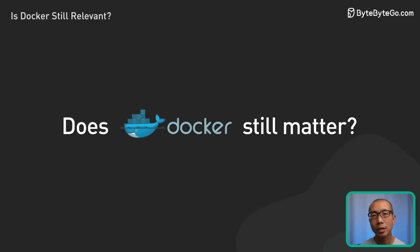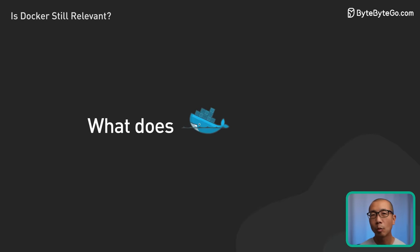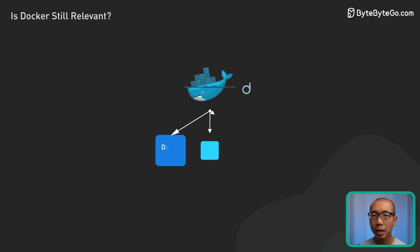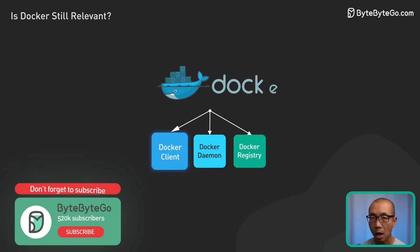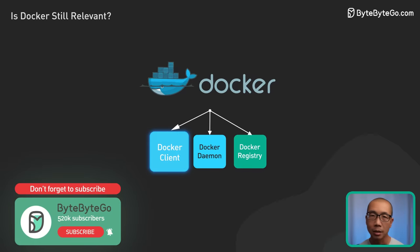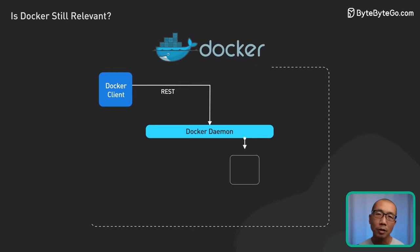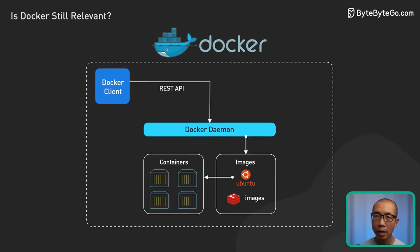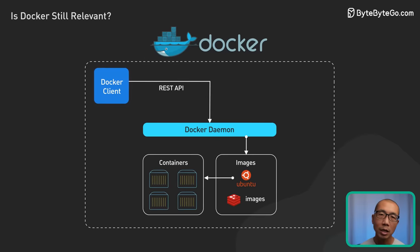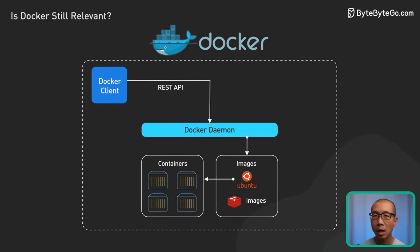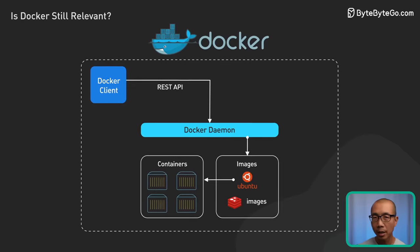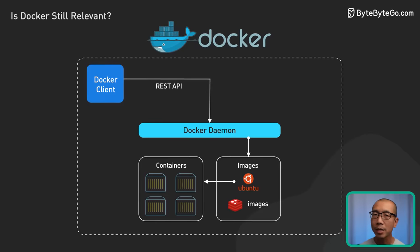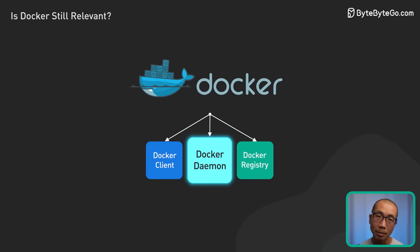Let's start by exploring this question: what does Docker do? Docker has three key components. The first is the Docker Client — the primary interface for interacting with Docker. It communicates with the Docker daemon to manage various Docker objects, including images and containers.